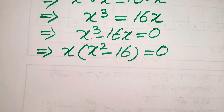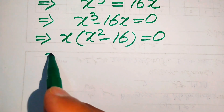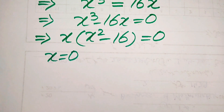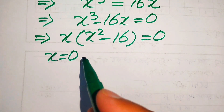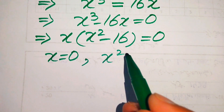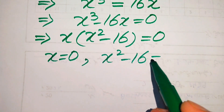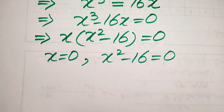In the next step we divide this equation into two cases. The first case is x equals 0, and the second case is x squared minus 16 equals 0.